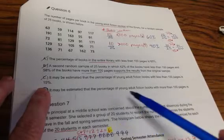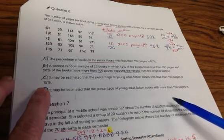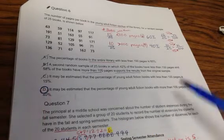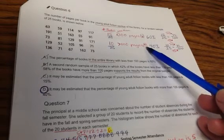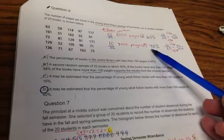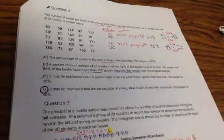It may be estimated that the percentage of young adult fiction books with more than 100 pages is 40%. Greater than 100 pages is 40%. That's exactly what we calculated, so choice D is what we like.